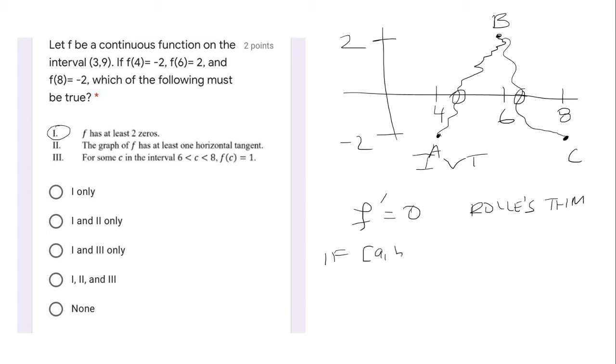Rolle's theorem says if A and B, the closed interval, is continuous and the open interval is differentiable, then the derivative is zero at some point C, where C is between A and B.